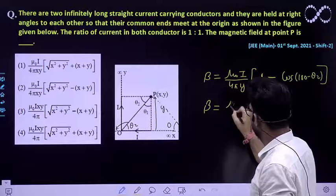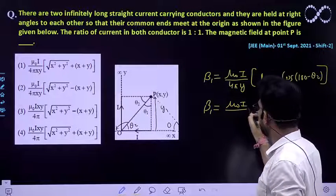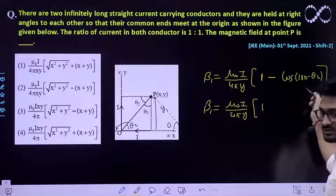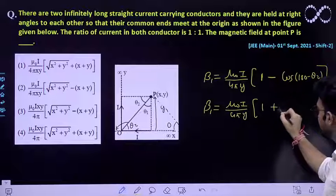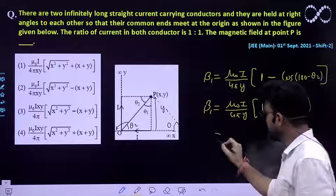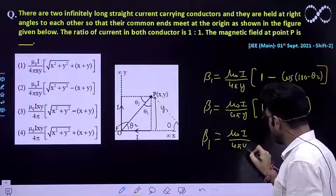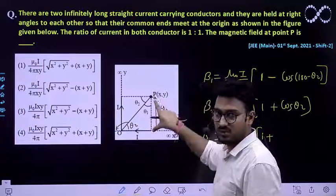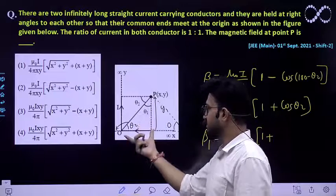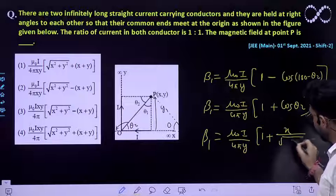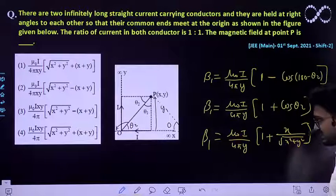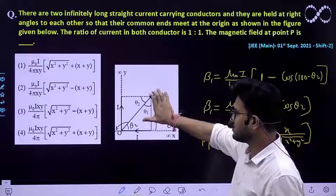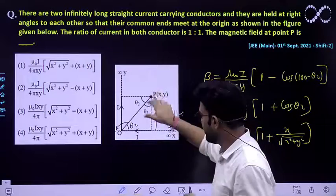Solving further, B₁ = μ₀I / (4πY). Since cos(180° − θ₂) = −cos θ₂, the minus signs cancel and we get (1 + cos θ₂). Now, cos θ₂ from the triangle with sides X and Y equals X / √(X² + Y²). The magnetic field due to this lower conductor is directed inward by the right-hand thumb rule, so this is the magnitude and direction of B₁.